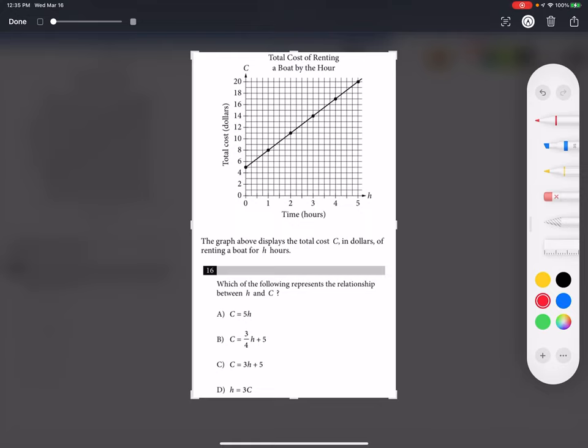So C equals H times M plus the Y-intercept, which we call B. How do I calculate the slope?